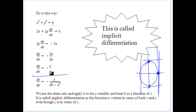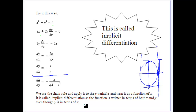So 2y dy/dx equals minus 2x, which gives dy/dx equals minus x over y. Since y equals the square root of 4 minus x squared, this matches what we got differentiating explicitly. That's the process of implicit differentiation — apply the chain rule to the y variable and treat y as a function of x.